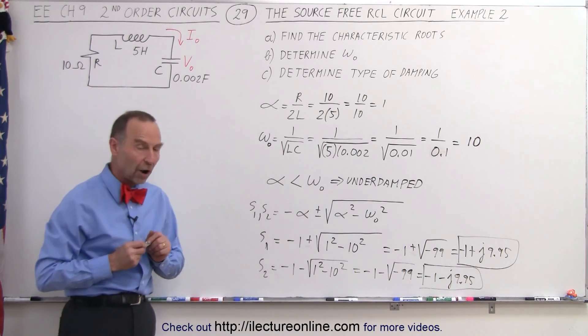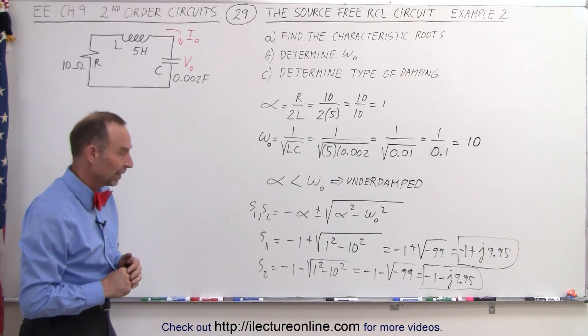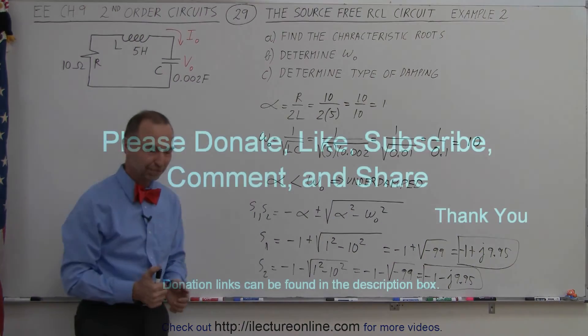Notice both characteristic roots are indeed complex numbers, indicating we have an underdamped system, and that is how it's done. Thank you.